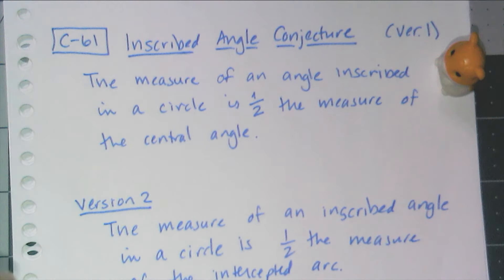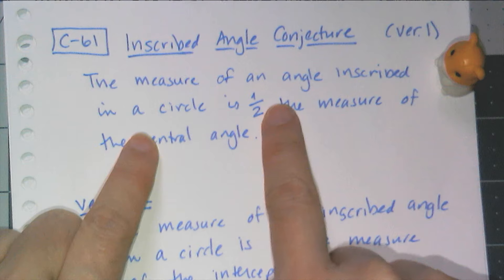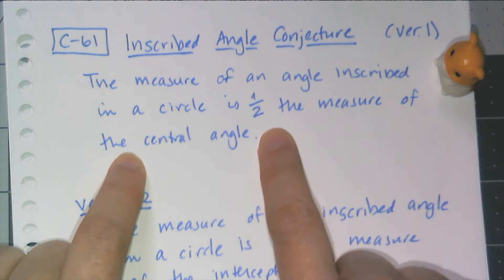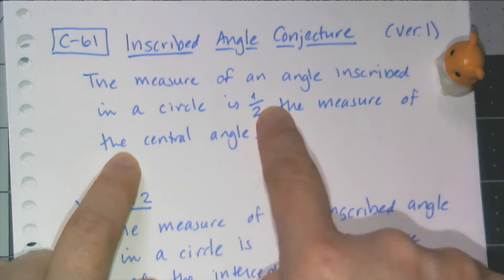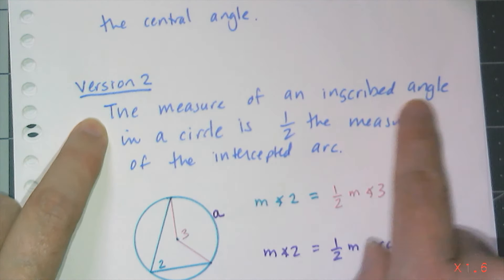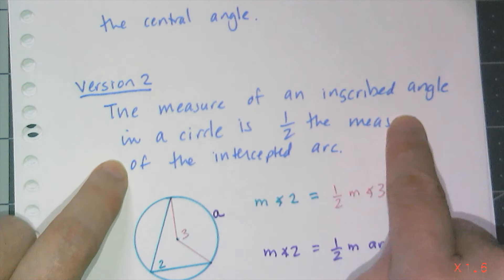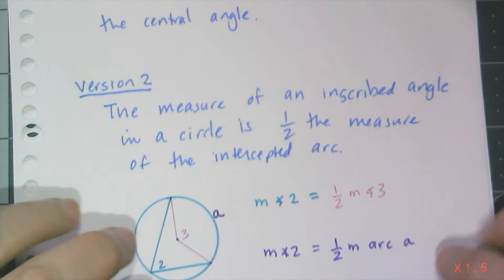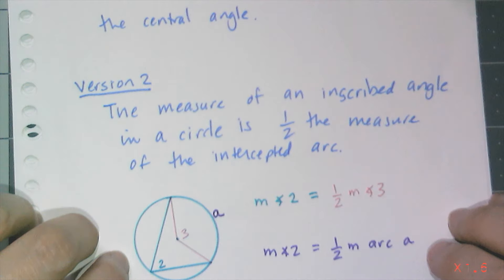All right, so the actual conjecture, we're going to number it C61. The inscribed angle conjecture has two versions. The first version says the measure of an angle inscribed in a circle is one-half the measure of the central angle. Now as a consequence of the central angle, we also have version two, which says the measure of an inscribed angle in a circle is one-half the measure of the intercepted arc. So depending on if we have central angles or arcs, we either want to use version one or version two.